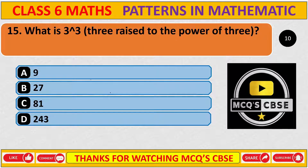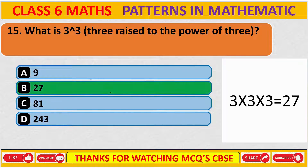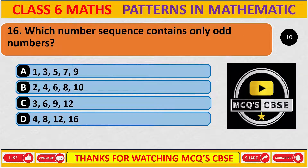What is 3 to the power of 3? The correct answer is B: 27. 3 to the power of 3 means 3×3×3.